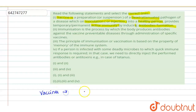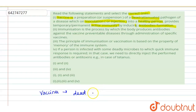Vaccines are a preparation of a dead or attenuated pathogen. If it is a virus, the nucleus — the dangerous part — is removed, making it a dead pathogen. This is then injected into a healthy person, and it provides temporary or permanent active immunity.